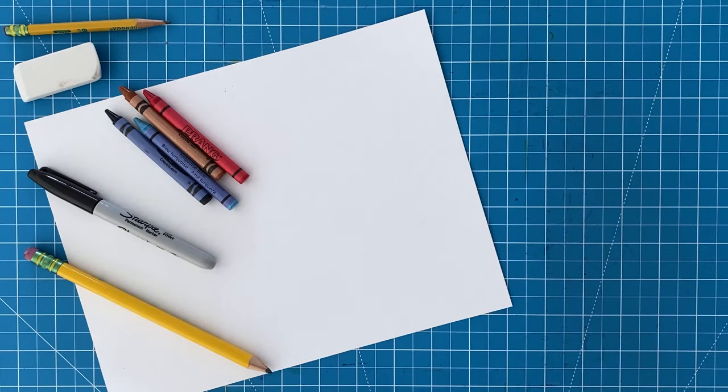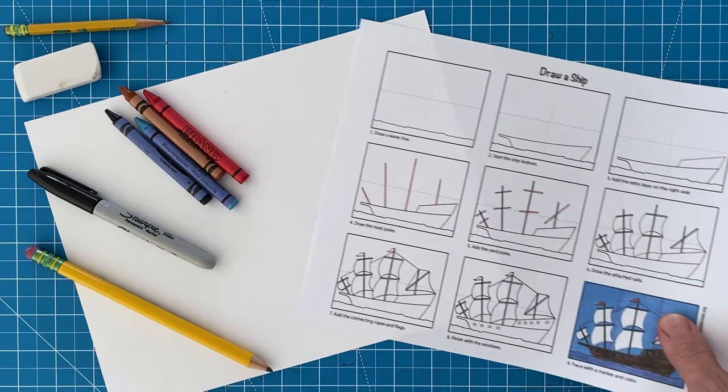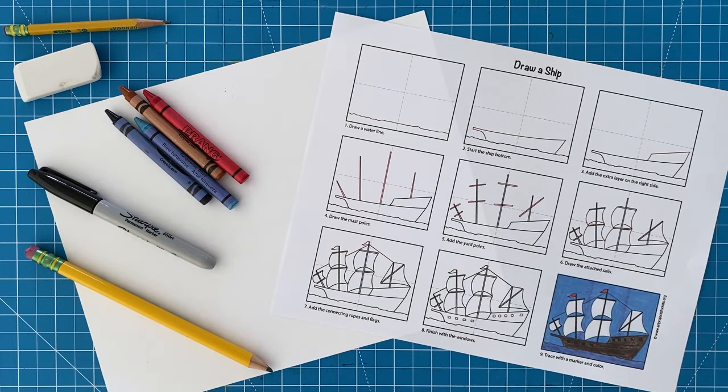First, the materials you need for this project are drawing paper, pencil, black marker, and crayons. You can also download this free Draw a Ship PDF tutorial from my website. Look at the description for a link.